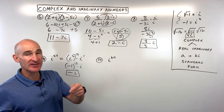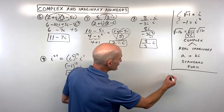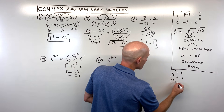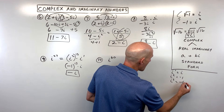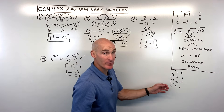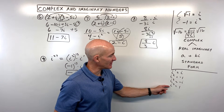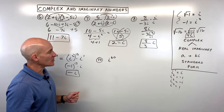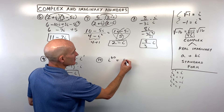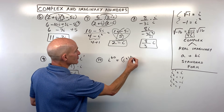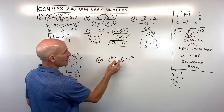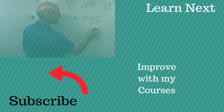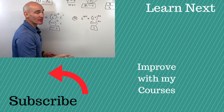Some teachers explain it using a repeating cycle: i to the first is i, i squared is negative one, i to the third is negative i, i to the fourth is one, and then it repeats. I find the grouping method a bit easier with less to memorize. For i to the 60th, two goes into sixty thirty times, so we write it as i squared to the 30th power. Since i squared is negative one, and negative one to an even power is positive, this simplifies to positive one.